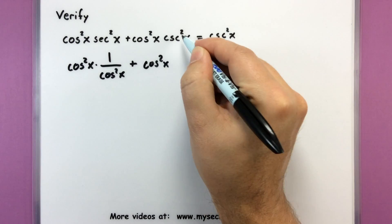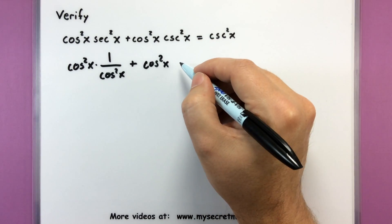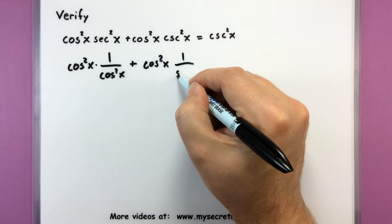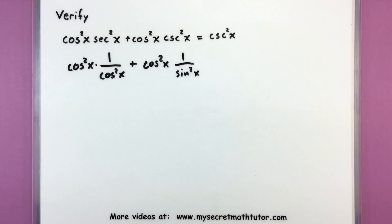Moving on. Cosine squared of x. This is, well, it's not cosine. It's 1 over sine squared of x.